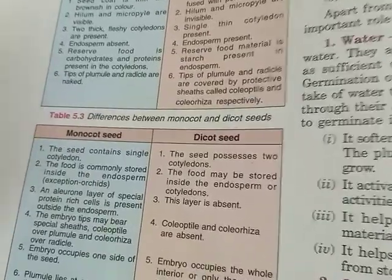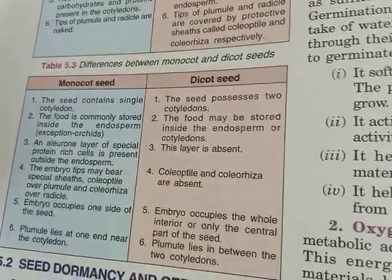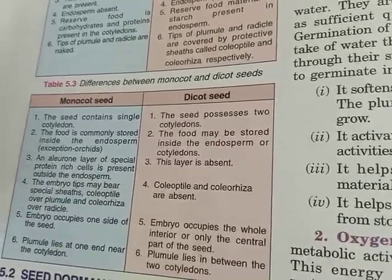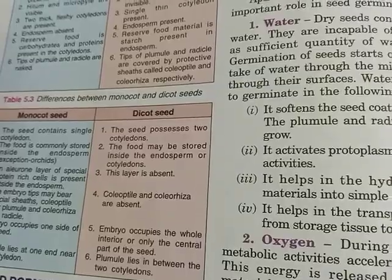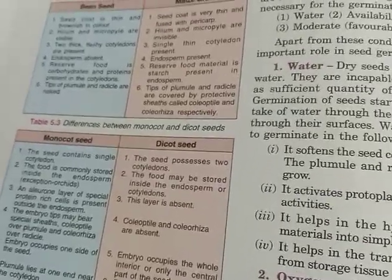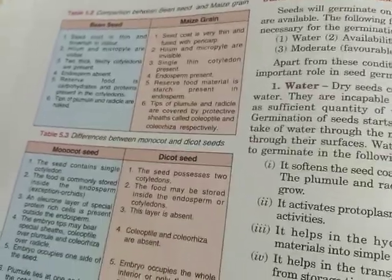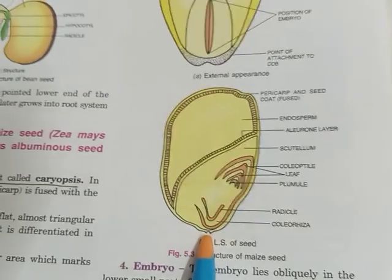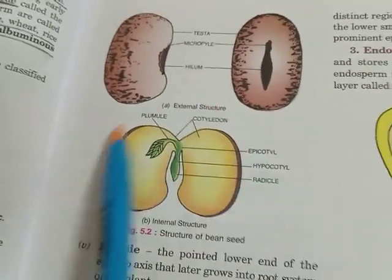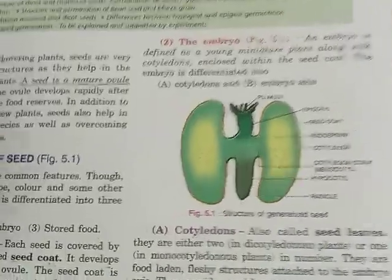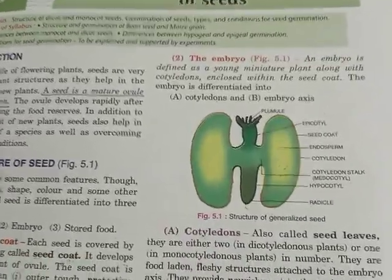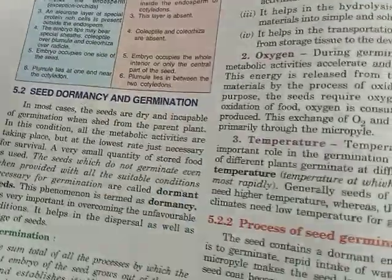Children, every point we have discussed is very important. The structure of the maize grain diagram, the bean seed structure, and the generalized seed structure are all very important. Practice making these diagrams at home and go through the videos again and again. In the next part, we will study seed dormancy and germination. Thank you.